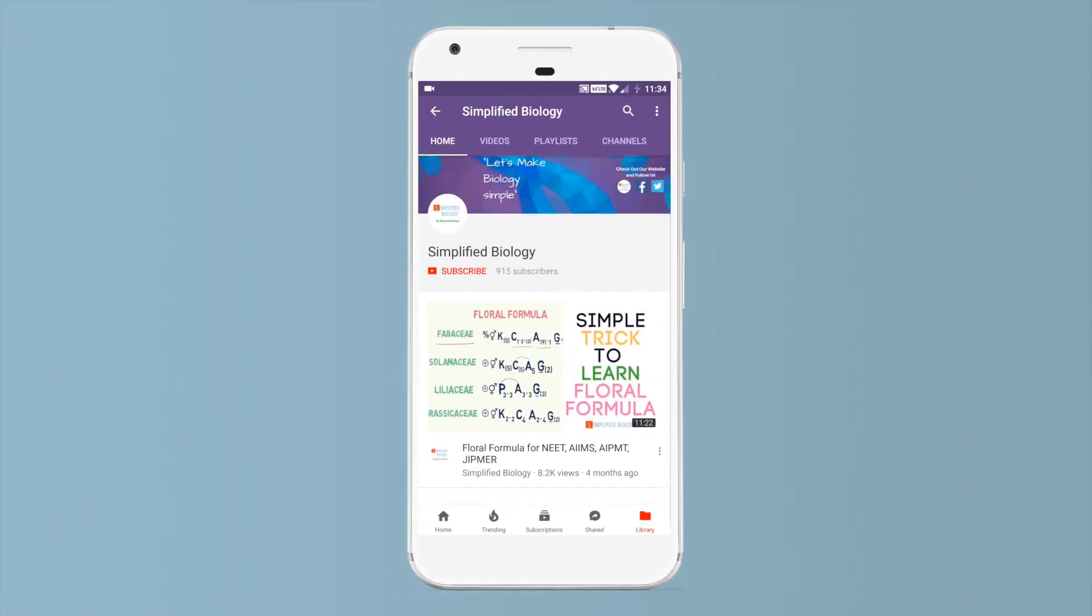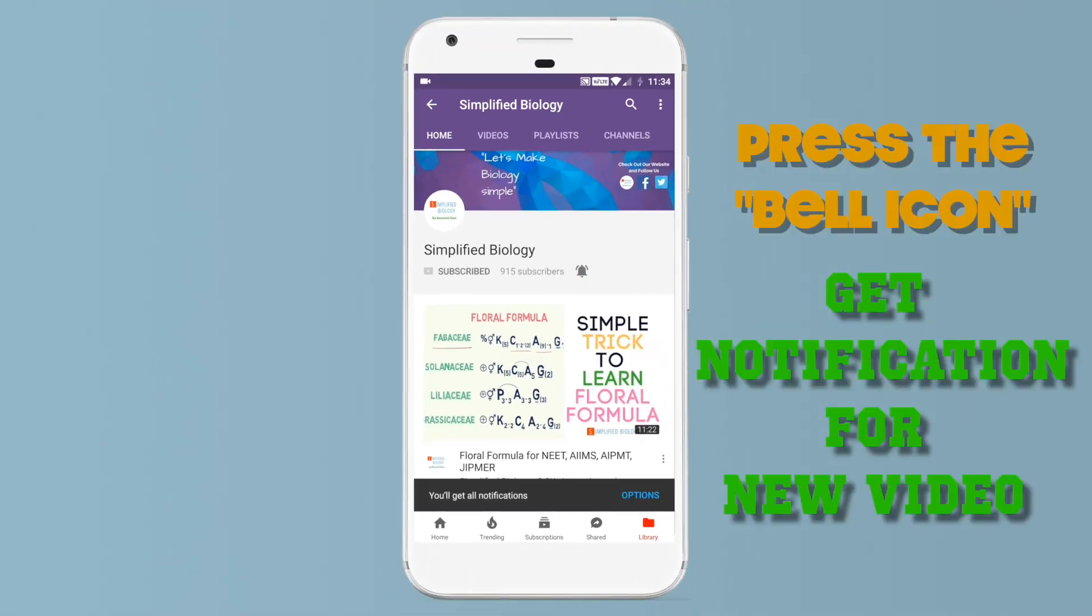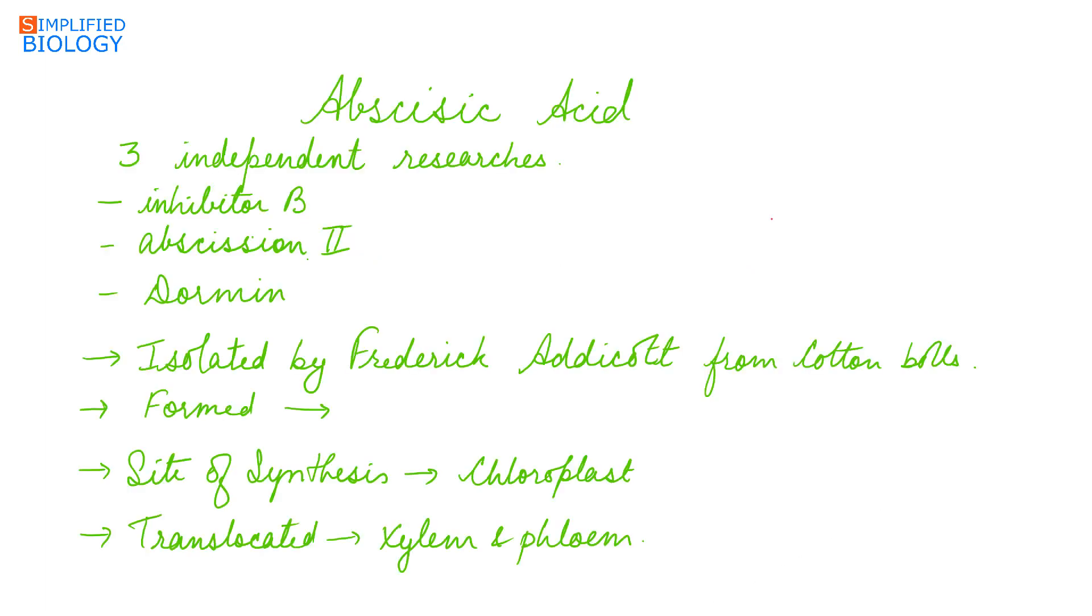Subscribe to Simplified Biology channel and press the bell icon to get notified when a new video is uploaded. Hello friends, welcome to Simplified Biology. Today's topic is abscisic acid, a plant growth regulator and plant growth inhibitor.